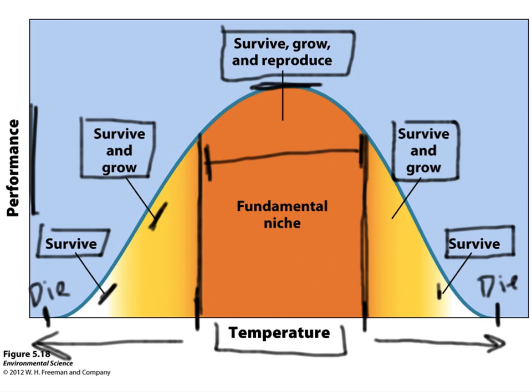Both the fundamental niche and the realized niche determine the distribution of a species around the world. It's important to understand both in order to understand species distribution. This is also important when we talk about global climate change and habitat loss. As climate changes, things like ocean pH, temperatures, or moisture in a particular area shift, and species may have to try to survive outside their fundamental niche — which may not be possible depending on how fast this occurs. They may not be able to adapt quickly enough. We'll talk more about how shifting temperatures, pH, and salinity due to global climate change may be detrimental to species in a later chapter.